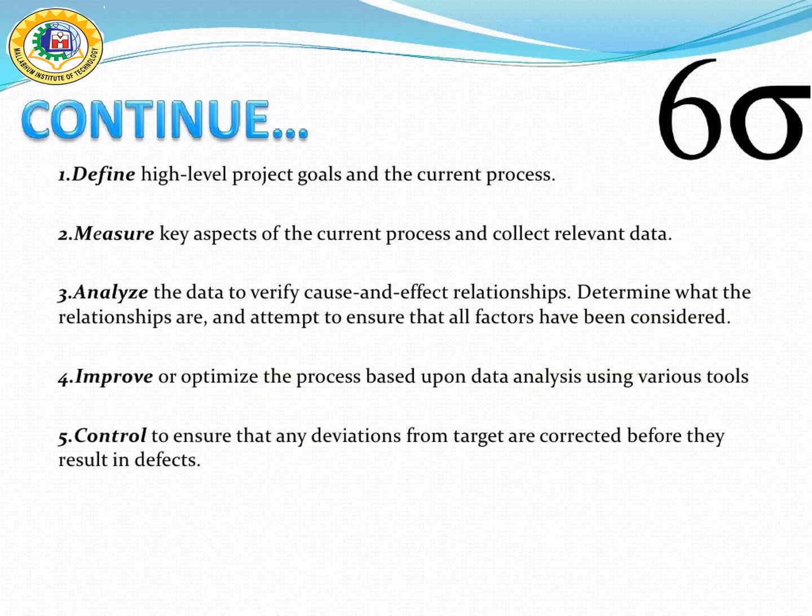Define: This phase is completed when the team creates a process map that includes the processes, inputs, and outputs. Measure: This phase includes creating and executing a data collection plan that provides reliable and significant data. After this point, the project team's efforts focus on eliminating or reducing variance as much as possible.